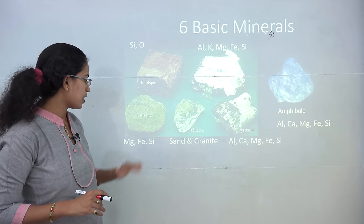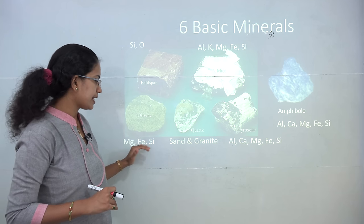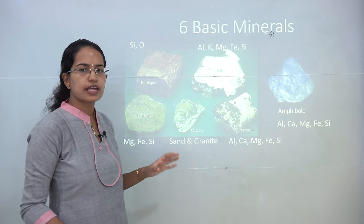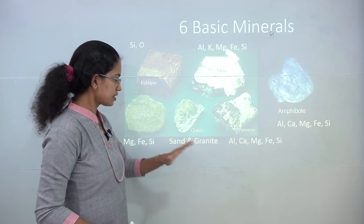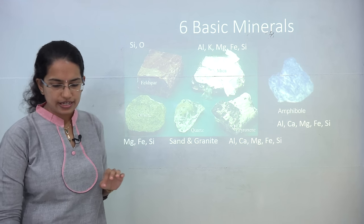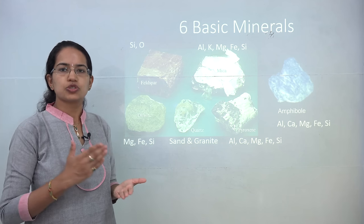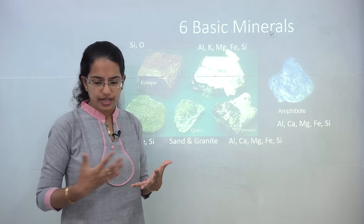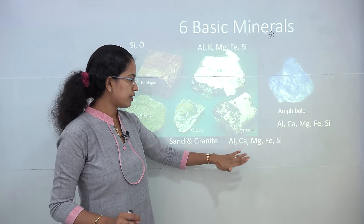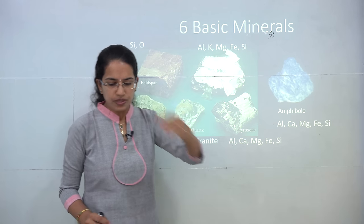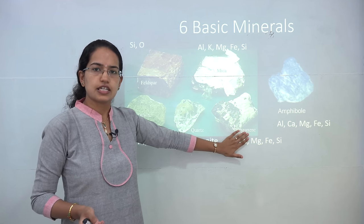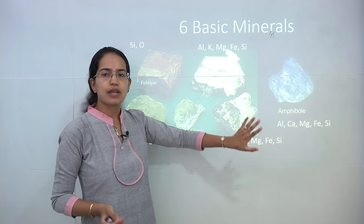The next mineral is olivine, which includes magnesium, iron, and silicon as the predominant materials. It is used in jewelry making and is primarily green in color. The next is quartz, made up of sand and granite components; it is usually white or colorless, used in radio and radar, and is insoluble in water. Then you have pyroxene, made up of aluminum, calcium, magnesium, iron, and silicon, constituting nearly 10% of the Earth's crust. It is associated with meteoroids and is black or green in color.